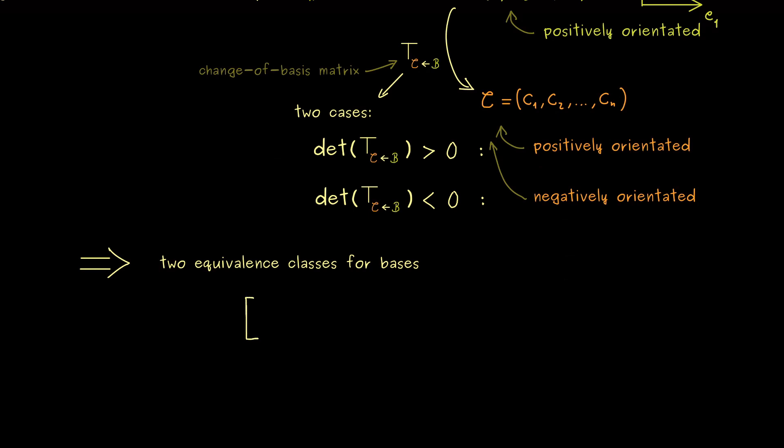And a basis of ℝⁿ is either in the one box or the other box. Hence choosing an orientation for ℝⁿ is just fixing one of the two boxes. So maybe I should emphasize again how we get the equivalence classes. Two bases are equivalent if the change of basis matrix has a determinant that is positive.